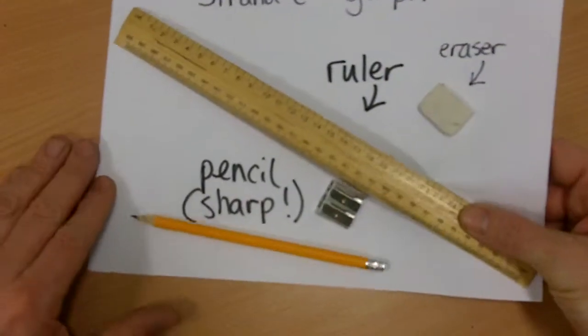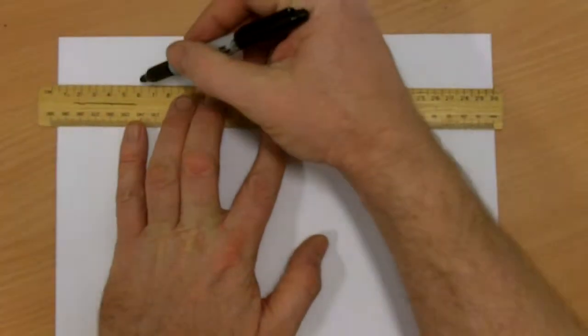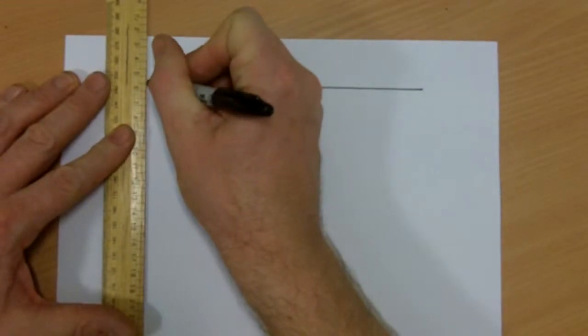Now before we get on to the graph plotting side of things, I just want to have a little think about how we set out results in a table. It's always important to get your table made before you start the experiment so that you have got a plan of your experiment in the table itself. So your table of results, I'm using a pen to draw mine so you can see it, but you should use a pencil and a ruler.